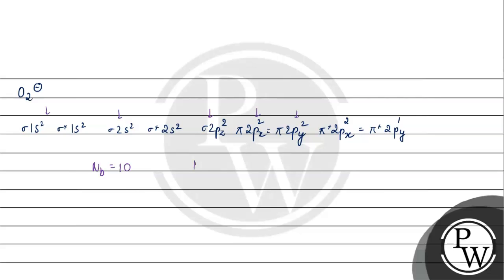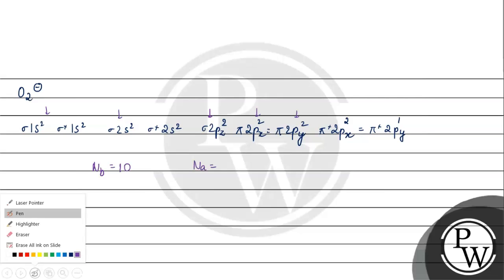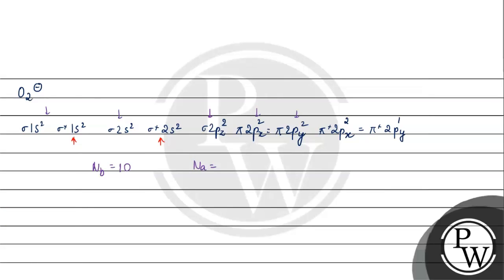Antibonding electrons: 2, 4, 5, 6, 7. Bond order is 10 minus 7 by 2, equals 3 by 2, which is 1.5. Bond order of O2 minus is 1.5. I hope you understood well. Thank you and all the best.